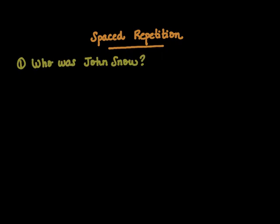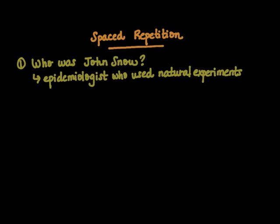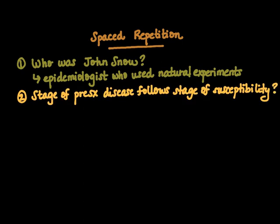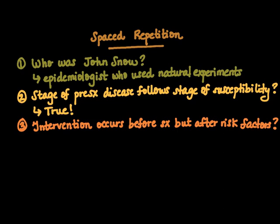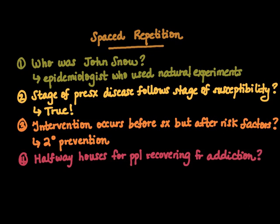We'll now quiz commonly tested concepts. Question one: who was John Snow — and no, we're not referring to the Game of Thrones character. John Snow was an epidemiologist who used natural experiments. Question two: true or false — the stage of pre-symptomatic disease follows the stage of susceptibility. This is in fact true; remember there are four stages. Question three: which intervention occurs before symptoms but after risk factors are present? This would be a secondary type of prevention.